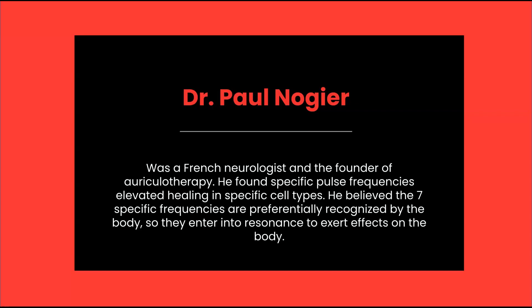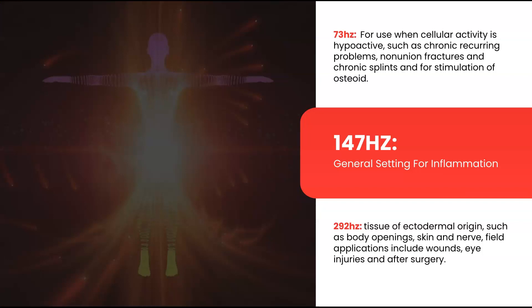Dr. Paul Nogier, who created the Nogier frequencies, was a French neurologist and the founder of auricular therapy. He found that specific pulse frequencies elevated healing in specific cell types, believing these seven specific frequencies are preferentially recognized by the body to exert effects through resonance. This was in 1970, way before scientists theorized that increased benefit of pulsing could be due to resonance. Nogier consists of seven frequencies. 73 hertz is for use when cellular activity is hypoactive, such as chronic recurring problems, poor healing fractures, chronic splints, and stimulation of osteoid. 147 hertz is a universal setting for inflammation — use this when you have swelling, pain, arthritis, etc.